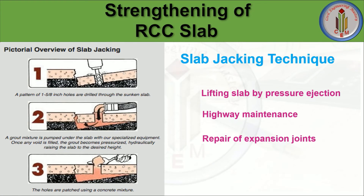Next is the slab jacking technique, which is mainly used in highways or where the slab has sunk. In this technique, we can lift a sunken slab by pressure ejection. As you can see in the image, you drill a hole through the sunken slab. The slab line should be level, but since it has sunk, you drill holes and a grout mixture is pumped under the slab with specialized equipment. Once any void is filled, the grout becomes pressurized, hydraulically raising the slab to the desired height. Once lifted, the holes are patched using a concrete mixture.